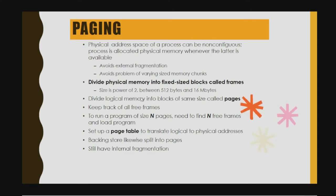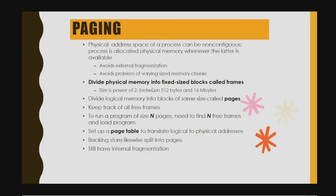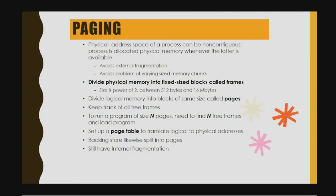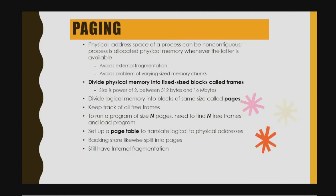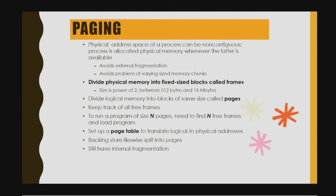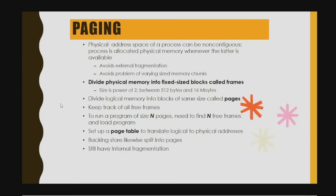The frame size is a power of 2, between 512 bytes and 16 megabytes — for example 4, 8, and so on. Logical memory is divided into blocks of the same size called pages. We keep track of all free frames. To run a program of n pages, we need to find n free frames and load the program. We then set up a page table to translate from the logical to the physical address.